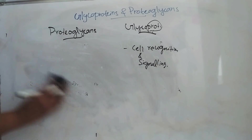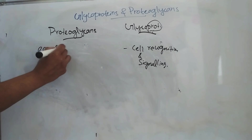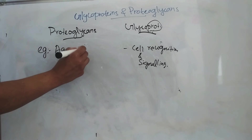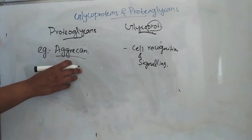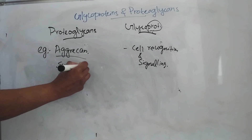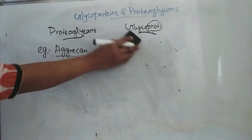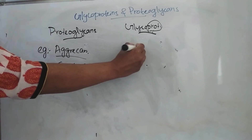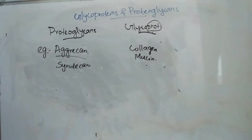Examples of proteoglycans include aggrecan, which contains chondroitin sulfate and protein, and syndecan. Examples of glycoproteins include collagen, mucin, etc. So this is about glycoproteins, proteoglycans, and their differences.